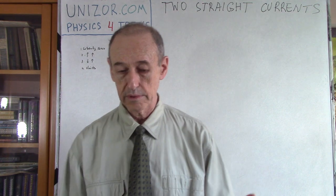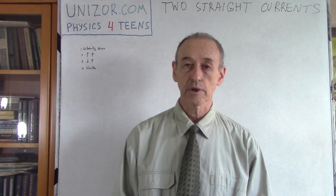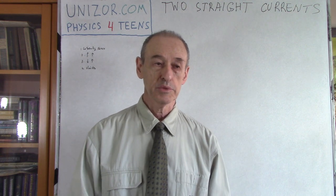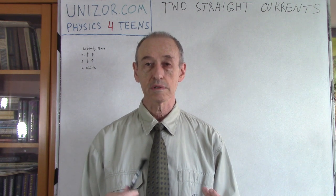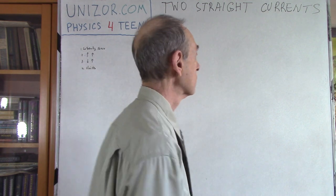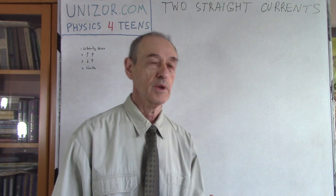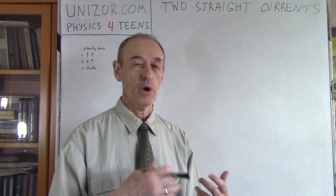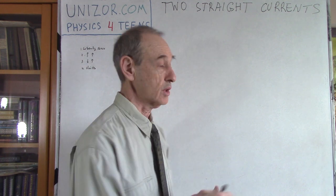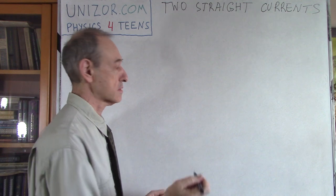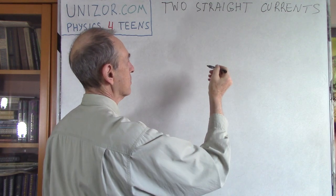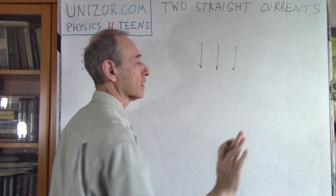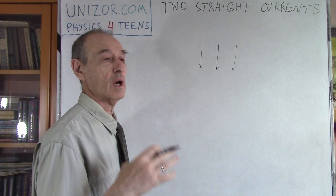Let's talk about electric currents and magnetism. First of all, I'd like to remind you of something we've discussed before: it's called Lorentz Force. The Lorentz Force is the force exerted by the magnetic field onto a straight-line current — or any current, but we were talking about straight lines. If you have a magnetic field, we're talking about a uniform magnetic field where all the lines are parallel to each other.